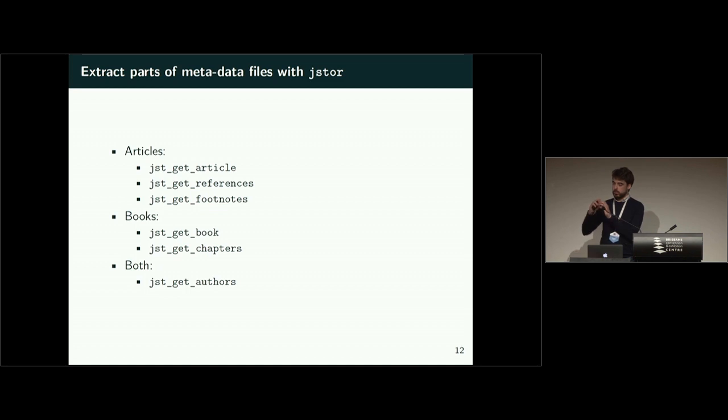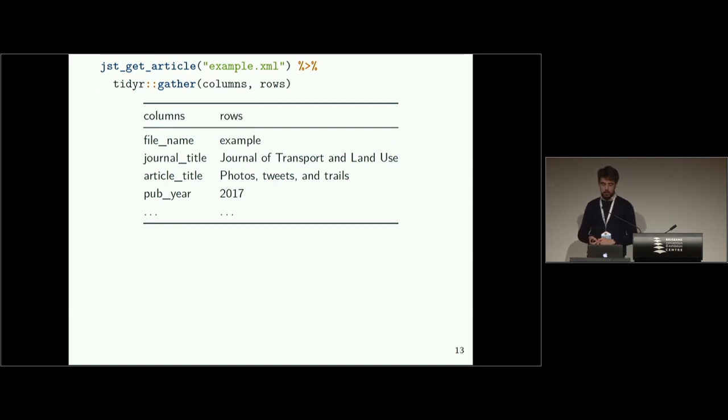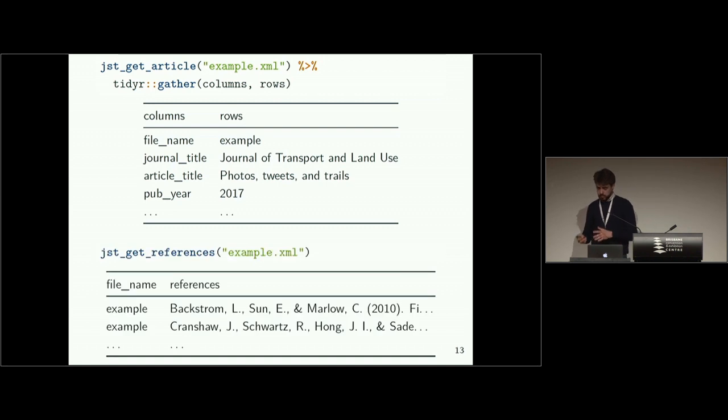References and footnotes are self-explanatory. For books, we get the get_book, the main part, and we can get information on all the chapters. And for both of them, we have get_authors. And from the ending of the functions, you can see get_article is always one item. So we only get one line because there is only one title per article, but there can be multiple footnotes and there can be multiple authors. Functions all work in a similar way. You give it a path to a valid file and it will give you as an output a tibble. Here we can see a few examples like the journal title, the article title and the publication year. And for the same article, the references will be just a list with many lines, where most of the time each line is just one reference.